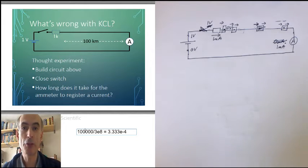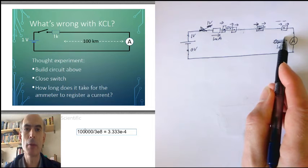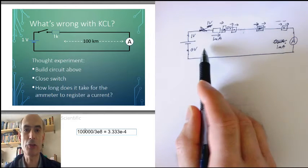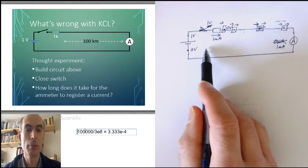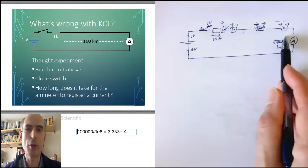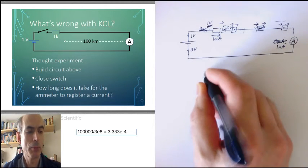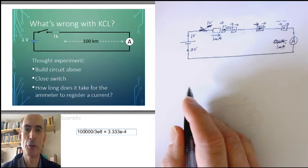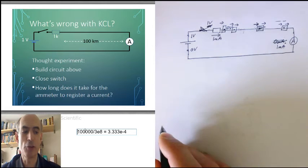How big a problem this is in real life depends on how big your circuits are and what time scales you're interested in, whether you can afford to wait for the propagation time from one side of the circuit to the other. The circuits that we build in the lab are not going to be 100 kilometers long. They're more likely to be somewhere around 10 centimeters long.